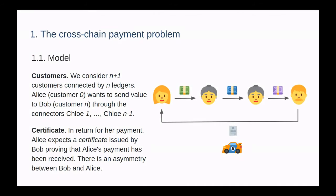In the cross-chain payment problem, we are going to consider a set of customers. The first customer is Alice. She wants to pay Bob, the last customer. However, they don't use the same currency, so Alice is going to rely on a set of connectors who are going to convert the value from one ledger to another. In exchange for Alice's payment, Bob is going to issue a certificate that proves that the payment is successful. For instance, we can consider the certificate to be some cryptographic signature.